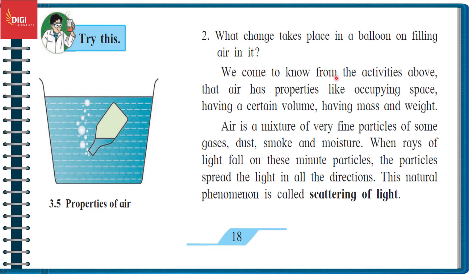We come to know from the activities above that air has properties like occupying space, having a certain volume, having mass and weight. Air is a mixture of very fine particles of some gases, dust, smoke, and moisture. When rays of light fall on these minute particles, the particles spread light in all directions. This natural phenomenon is called scattering of light.